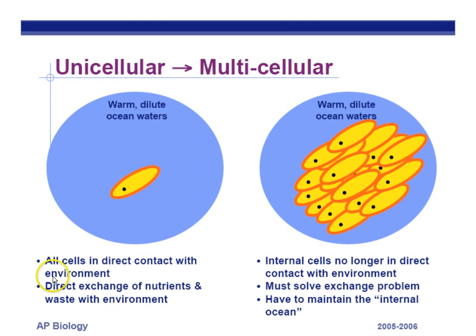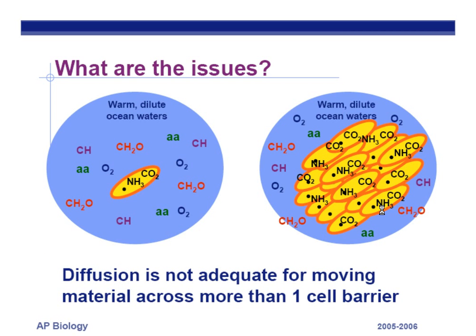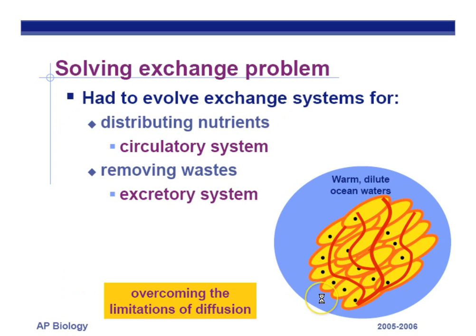If you're unicellular, you're in direct contact with the water you live in, and there's a quick exchange across your cell membrane. However, in a multicellular organism, internal cells must deal with getting rid of waste. Diffusion is inadequate for moving materials across more than one cell barrier, so the solution is the circulatory system. The circulatory system distributes nutrients like glucose, amino acids, and oxygen, but also removes wastes like carbon dioxide and ammonia — overcoming the limits of diffusion.